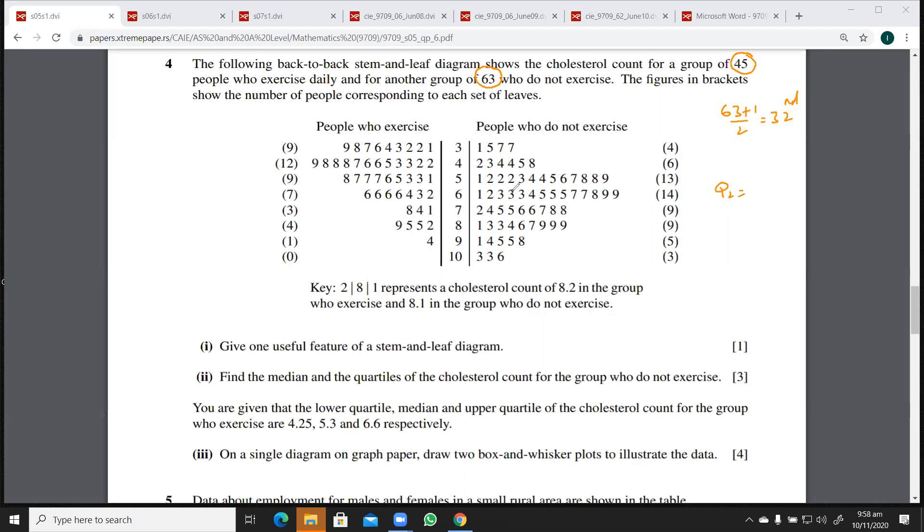24, 25, 26, 27, 28, 29, 30, 31 and 32. This is the median here. So according to the key, this is going to be 6.5. That is the cholesterol count for the people who do not exercise. So this was the 32nd value. So that means if you want to divide this into two groups, there are 63 observations.